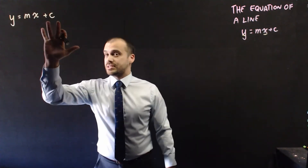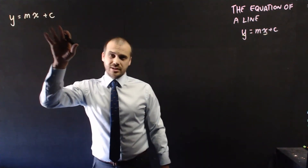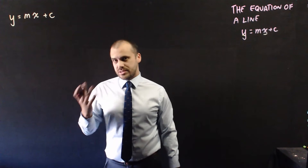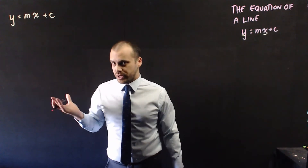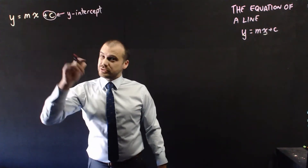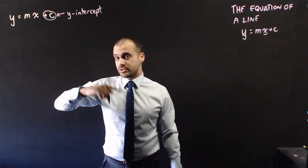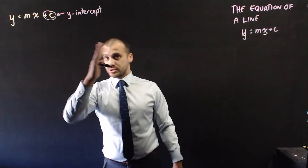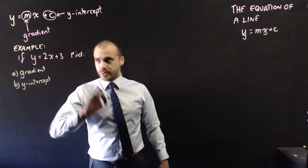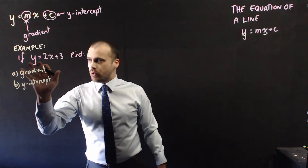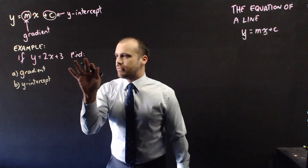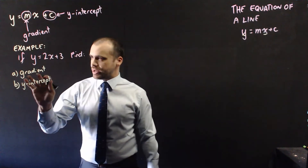This c on the end tells you the y-intercept of your line. And the m value tells you the gradient of your line — how sloped your line is. A very quick example: if y equals 2x plus 3, find the gradient.